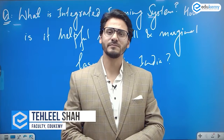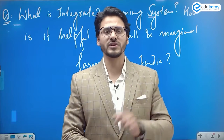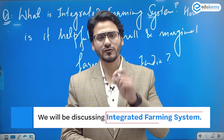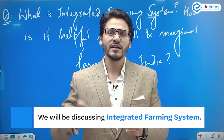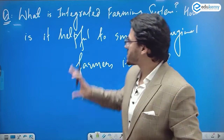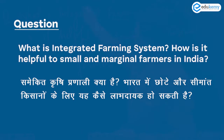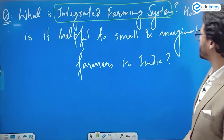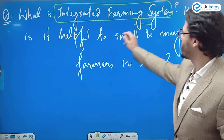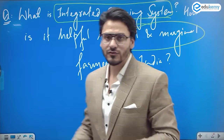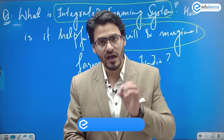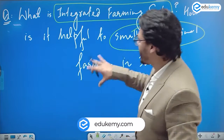In UPSC 2022 GS Mains Paper 3, there was a question on Integrated Farming System. The question had two parts: the first part asked what is an integrated farming system, and the second part asked how it is helpful for small and marginal farmers.